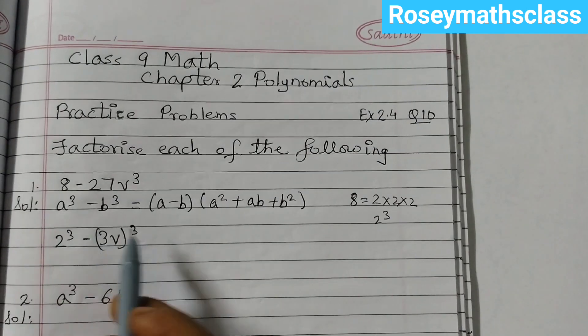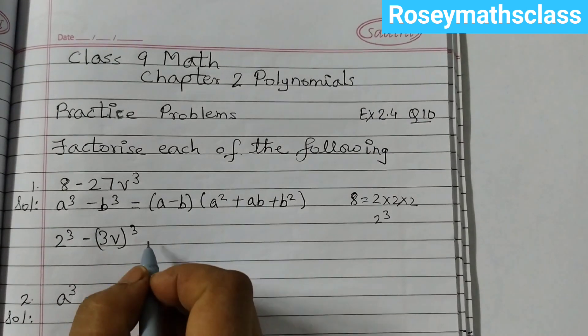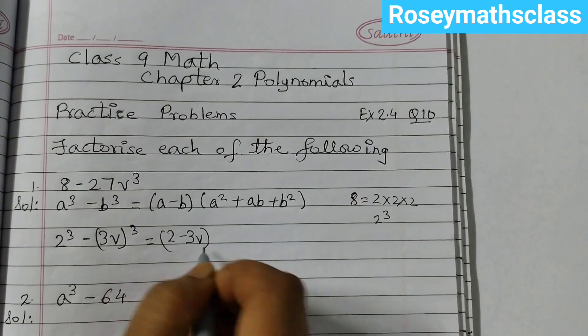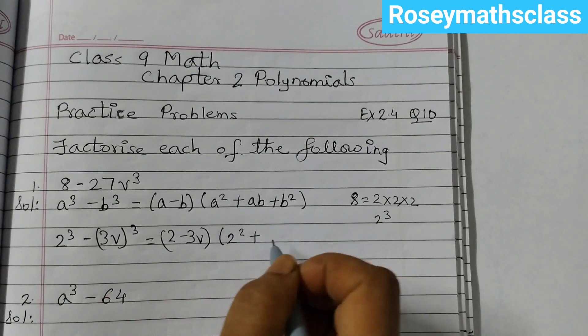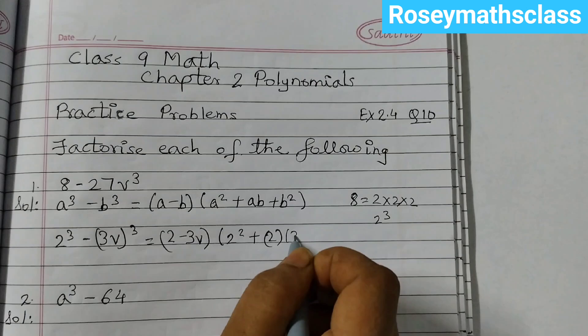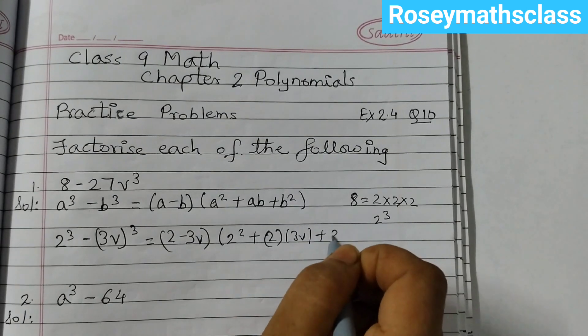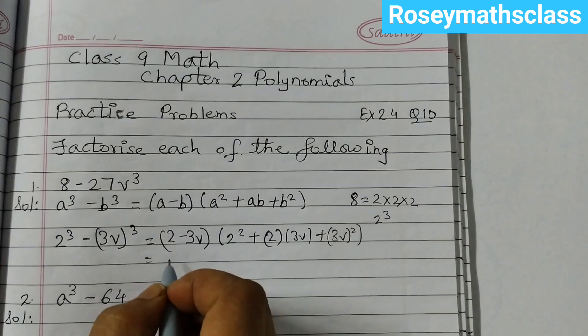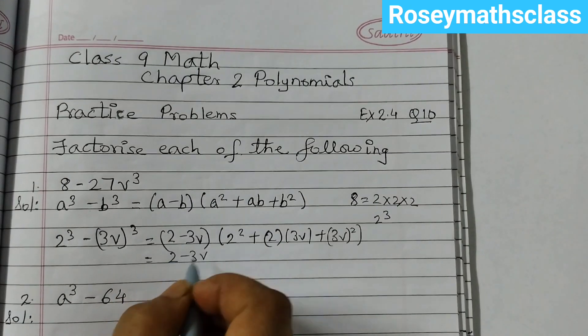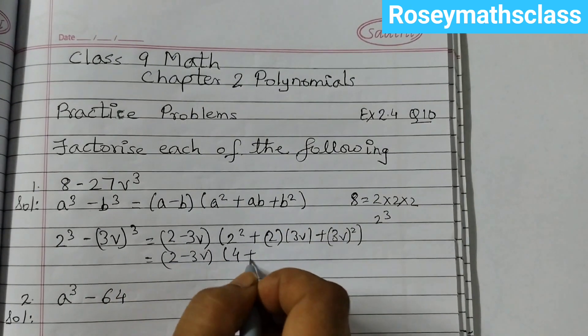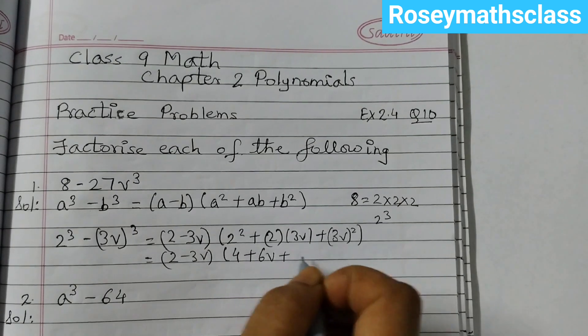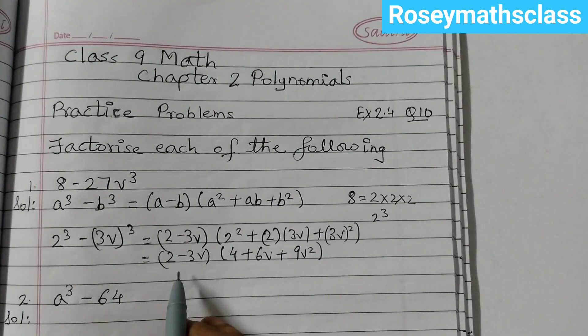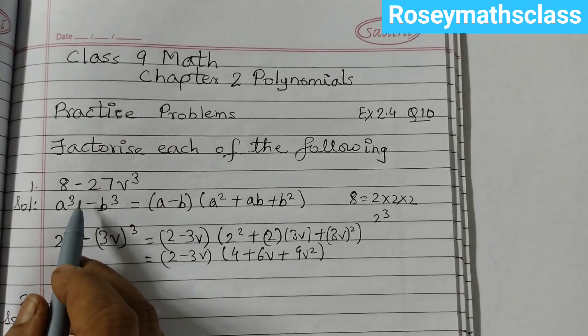So now this is in this form and we will just apply the formula. 2 minus 3V, bracket, 2 squared plus 2 multiplied by 3V plus 3V the whole squared. Simplify this: 2 minus 3V, 2 twos are 4 plus 6V plus 3 threes are 9, 9V squared. So these are the factors of this given polynomial.